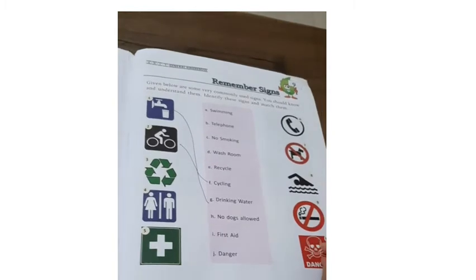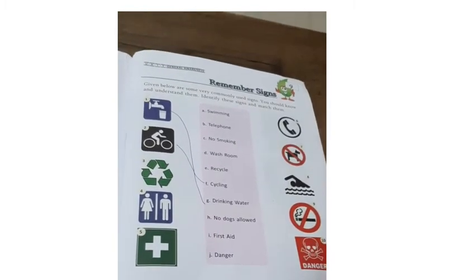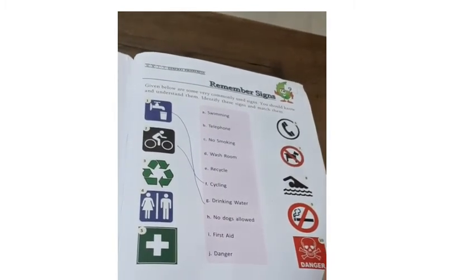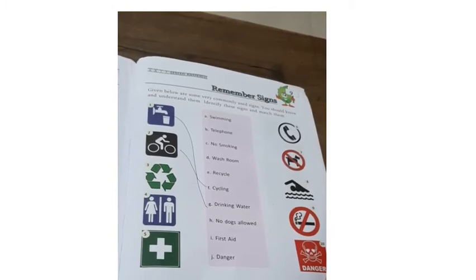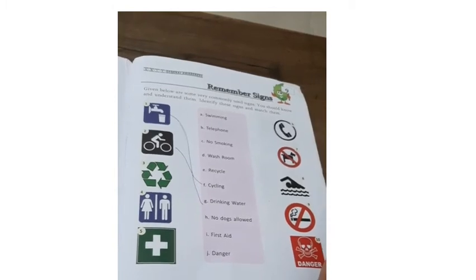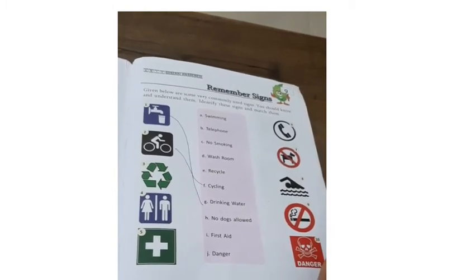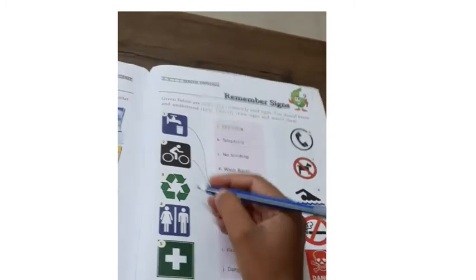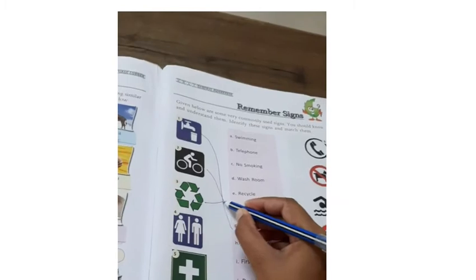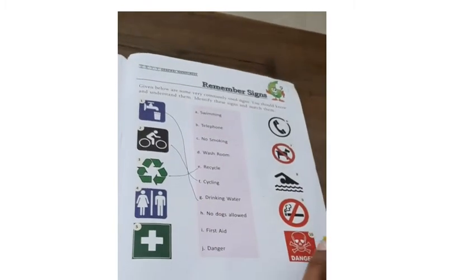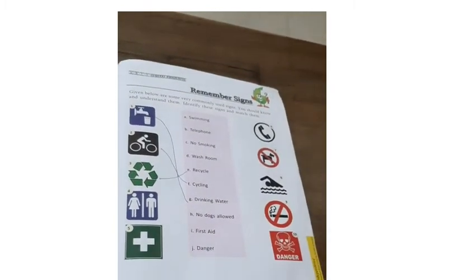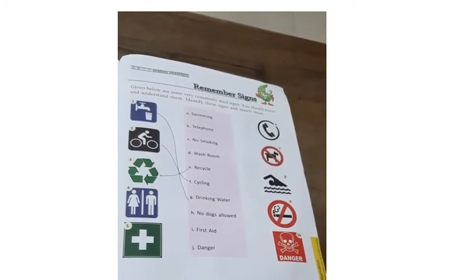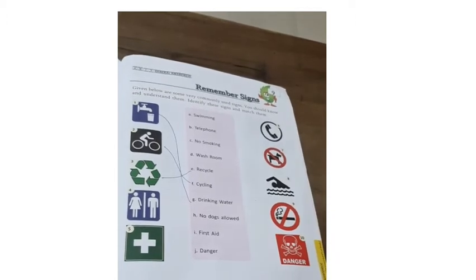Number 3 — this symbol is for recycle. Recycle means that any waste we have, we can use it again. Any item can be reused. That is called recycle. So this is the recycle symbol.